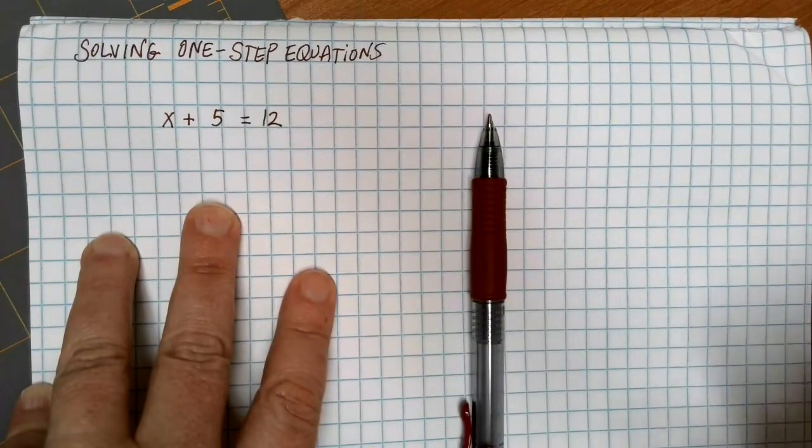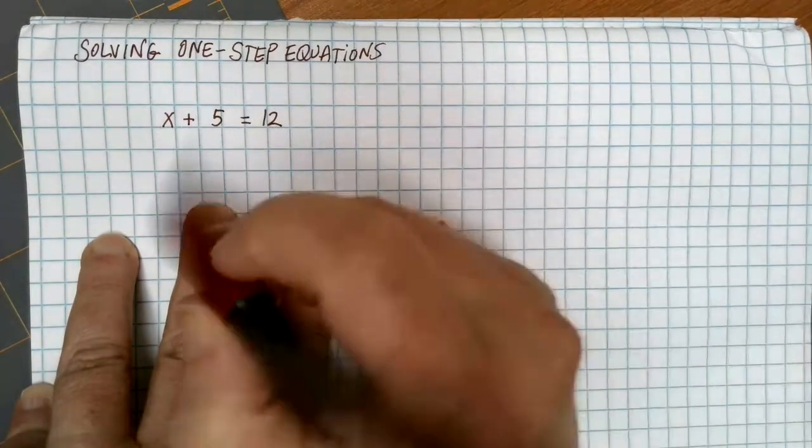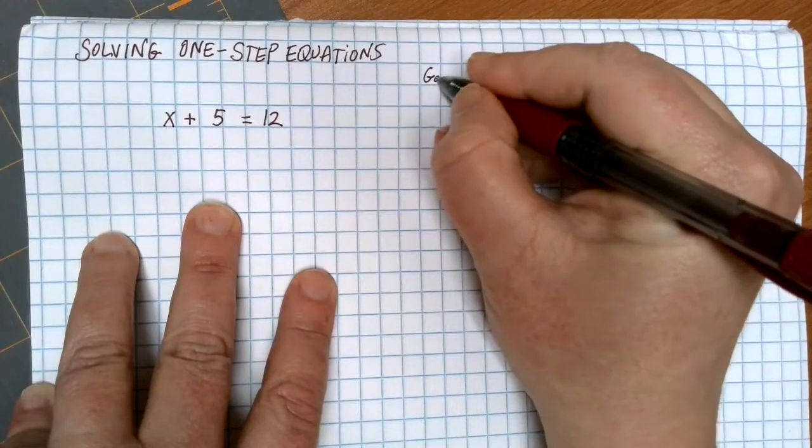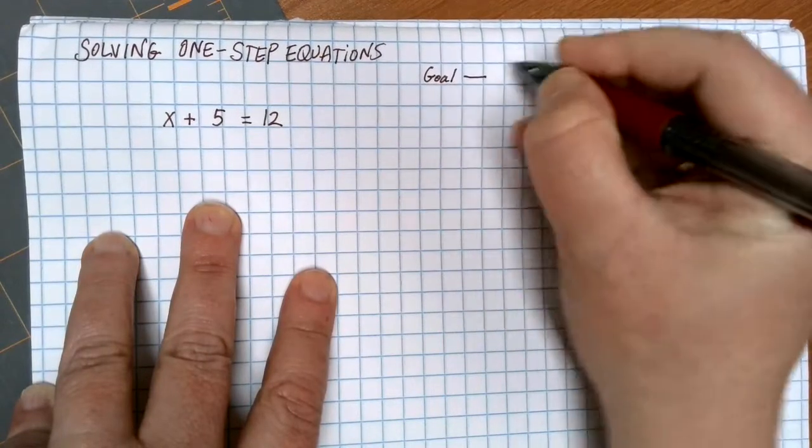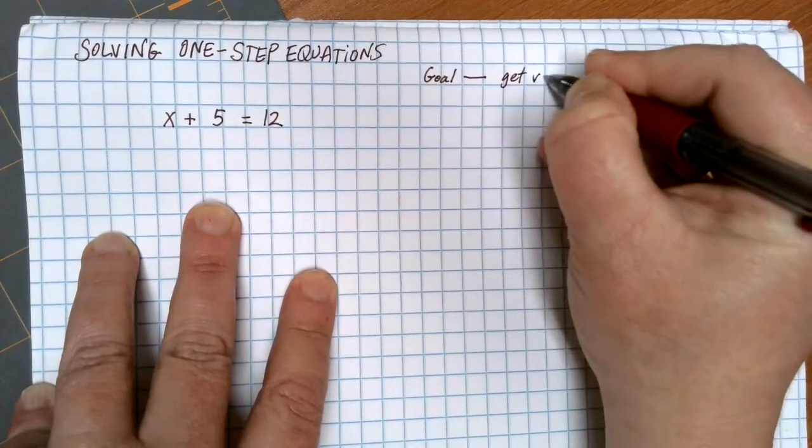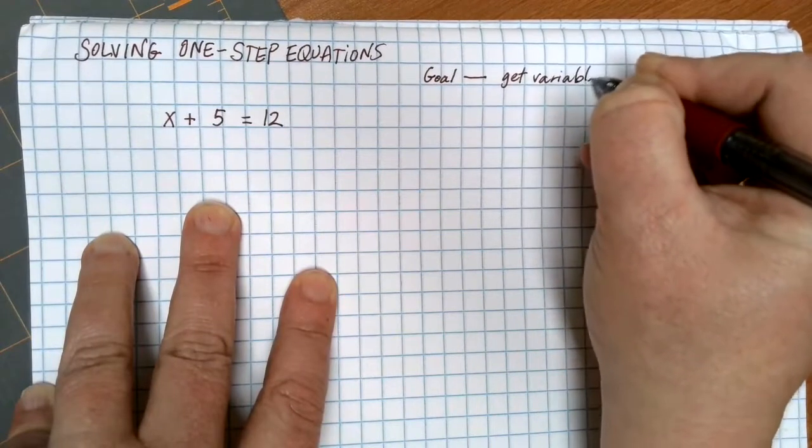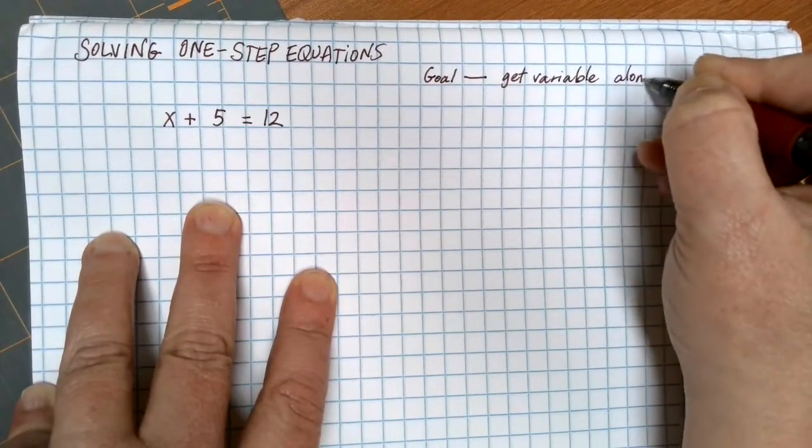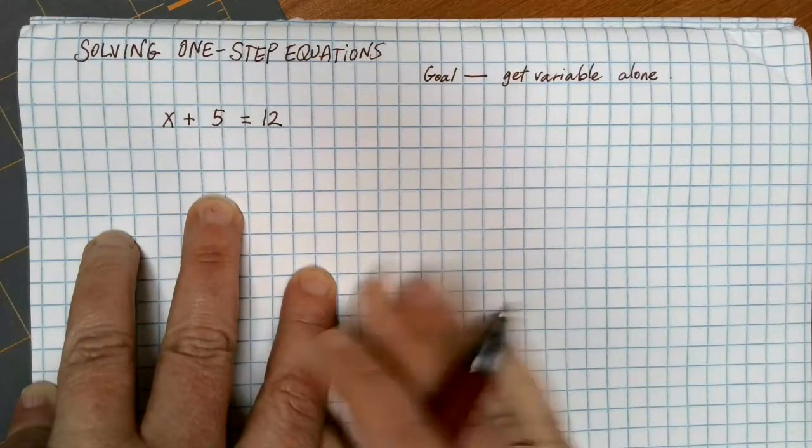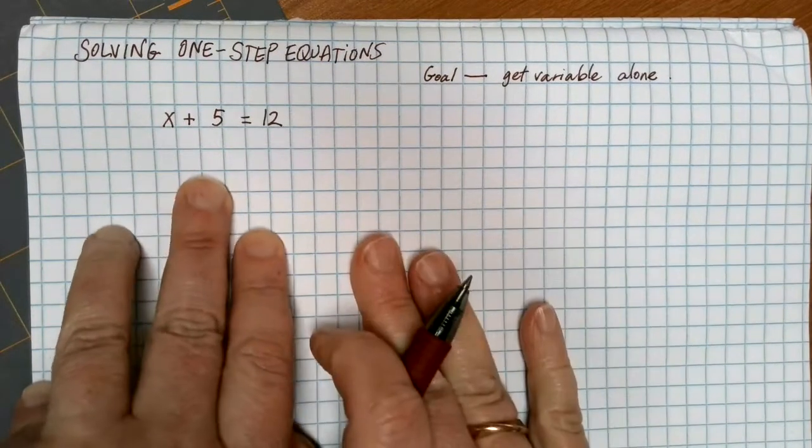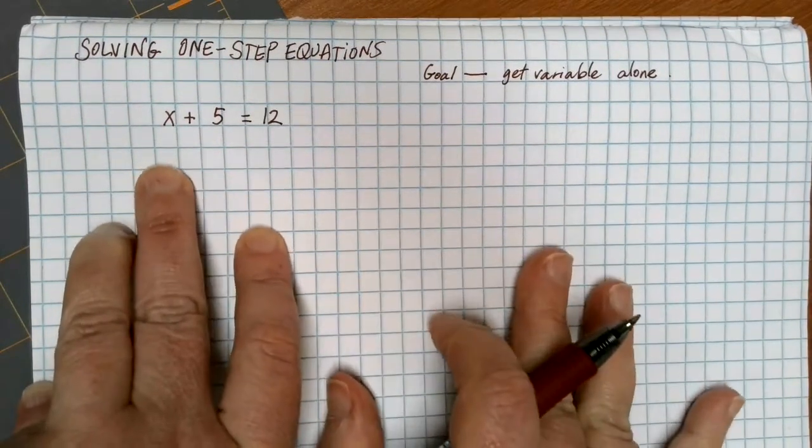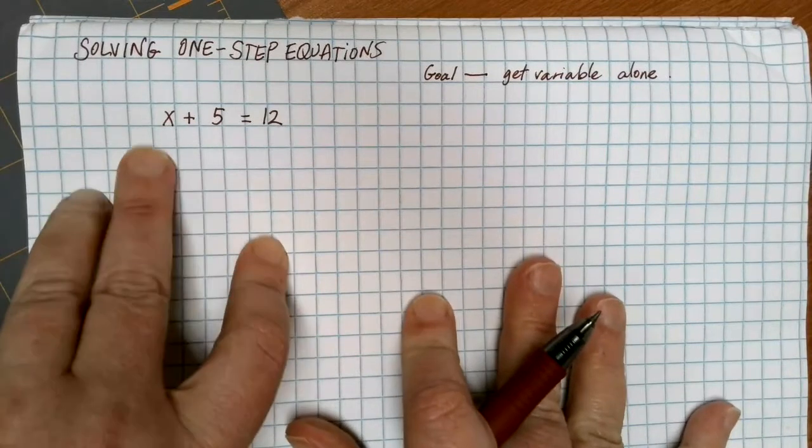What is the goal when I have an equation? Any time that you have an equation, your goal is to get the variable alone. If we want to get the variable alone, we have to move anything that is on the same side of the equal sign as the x.